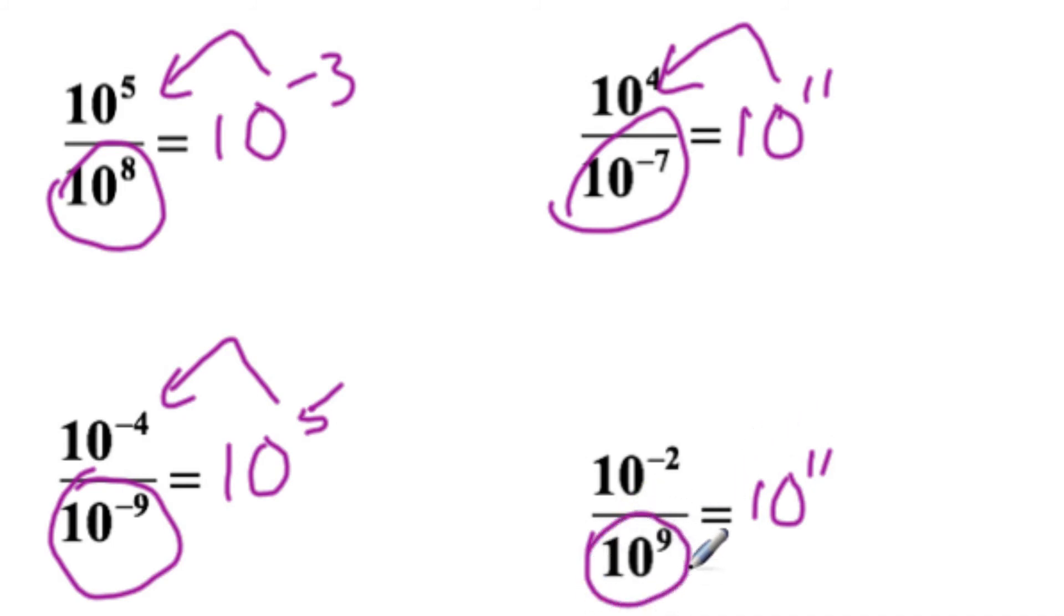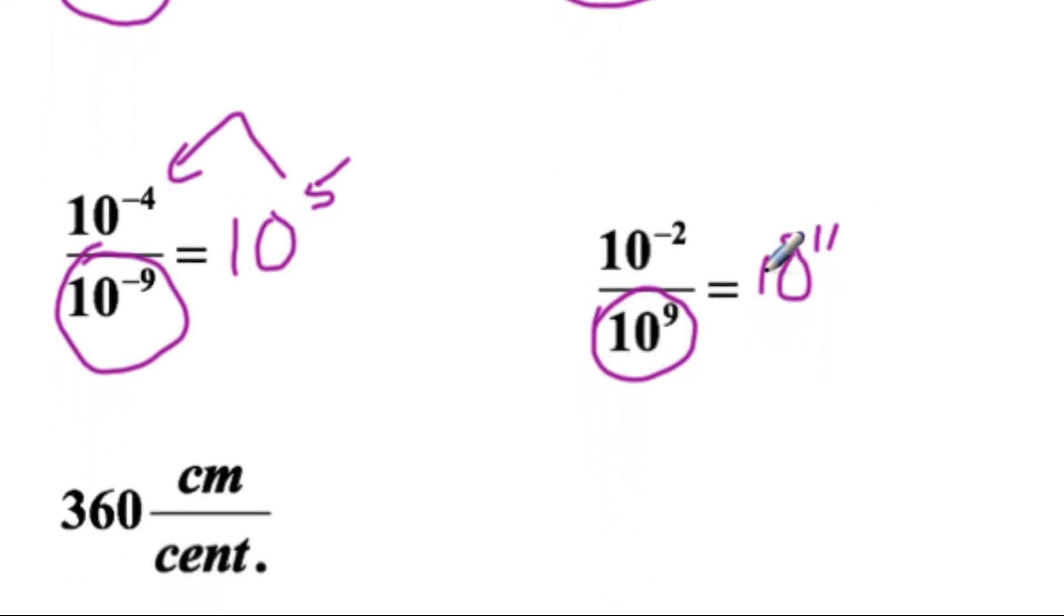So I'm dividing by a number greater than one, and therefore my answer should be less than the numerator. So this should be 10 to the minus eleventh. That wasn't staged. I actually did that.